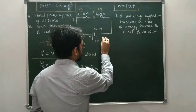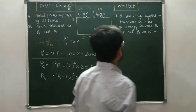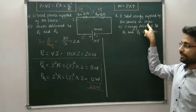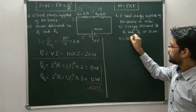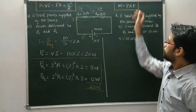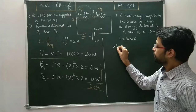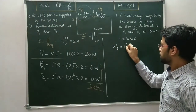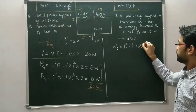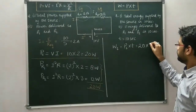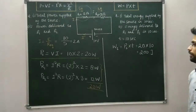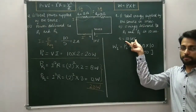Now come to the energy part. Find the total energy supplied by the source in 10 seconds. Time is given as 10 seconds. We know the formula: electrical energy supplied equals power supplied multiplied by time. How much power is supplied? 20 watts. So it equals 20 multiplied by 10, which gives 200 joules. So 200 joules of energy is supplied in 10 seconds by the source.